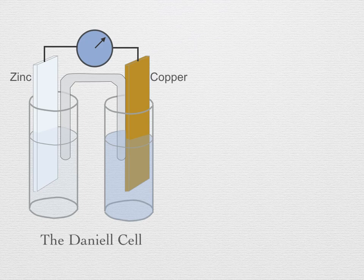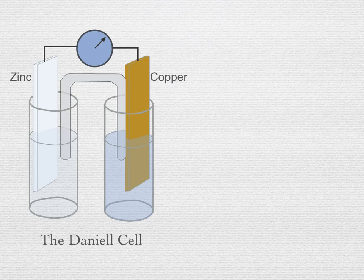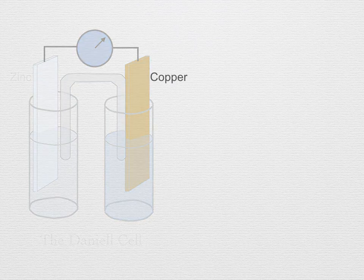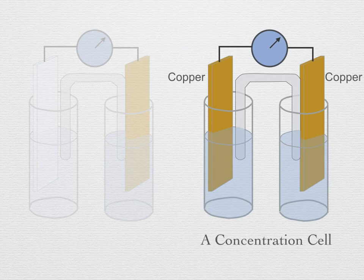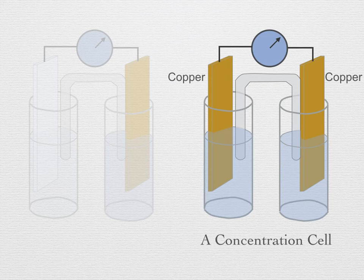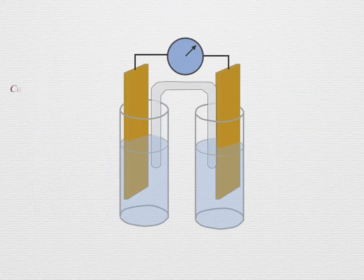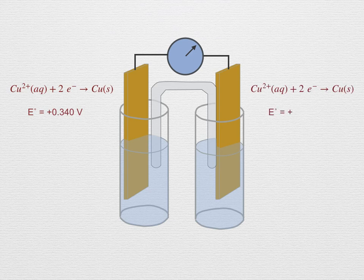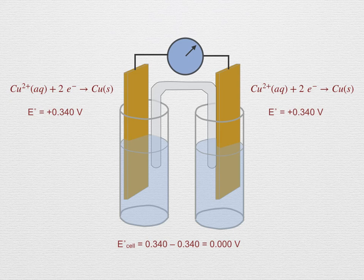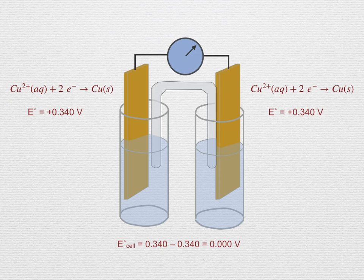One interesting application involves constructing a cell from two half cells of identical materials. Instead of the Daniell cell, imagine replacing the zinc electrode with another copper electrode and the zinc sulfate solution with another copper sulfate solution. What would be happening in this cell? With both half cells under standard conditions, their standard reduction potentials are identical. Which one is the cathode and which is the anode? The cell potential would be 0.34 minus 0.34 is zero. The cell would obviously be at equilibrium. There is no net chemical force driving the reaction in either direction.